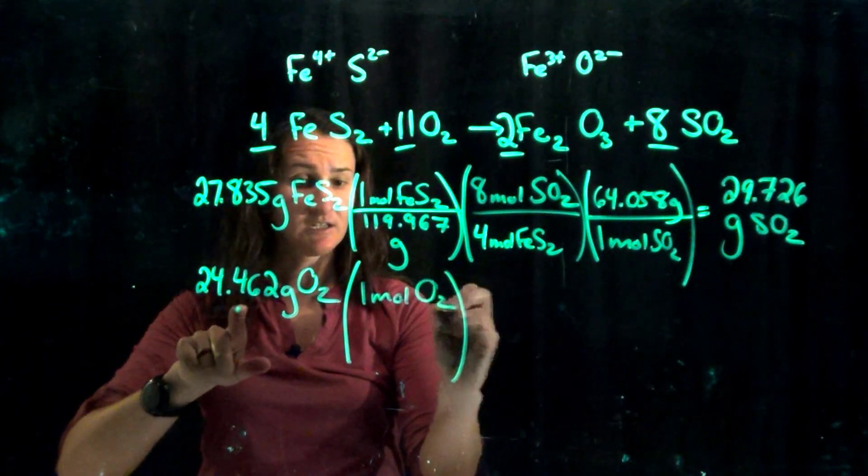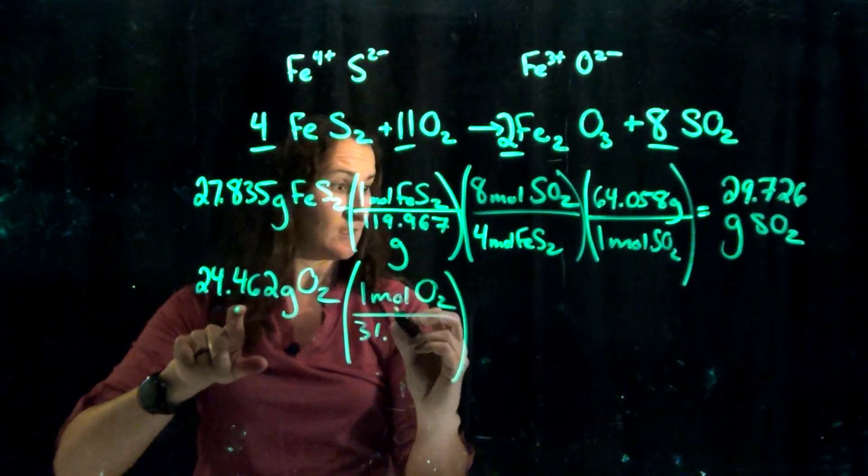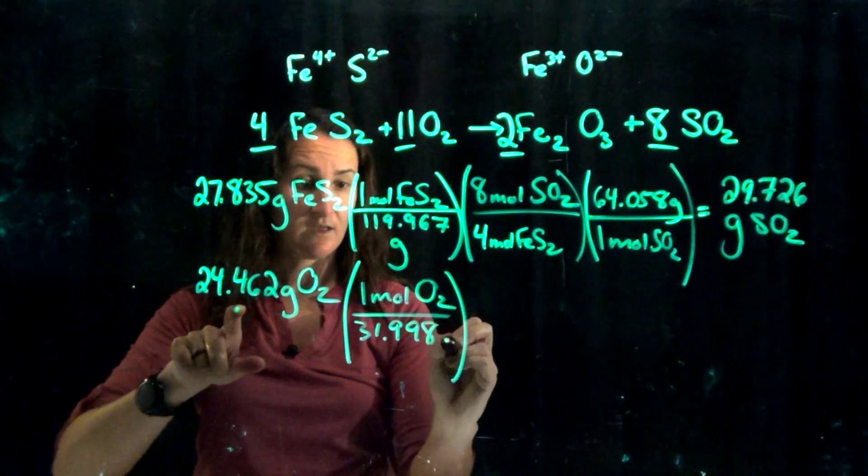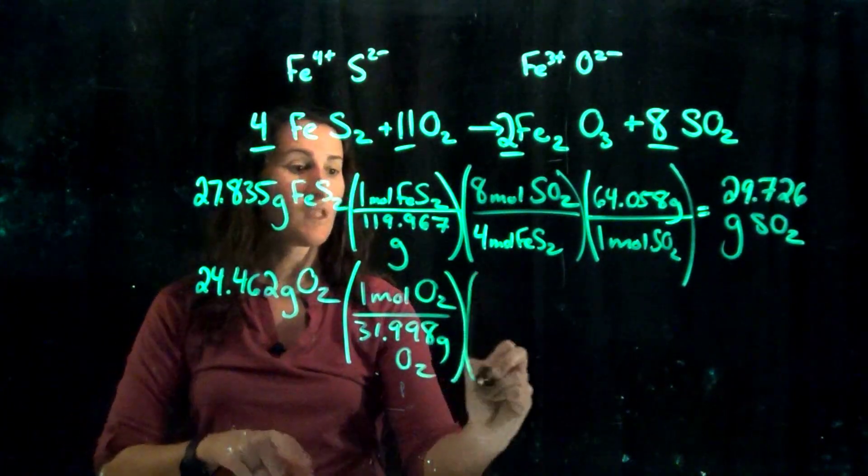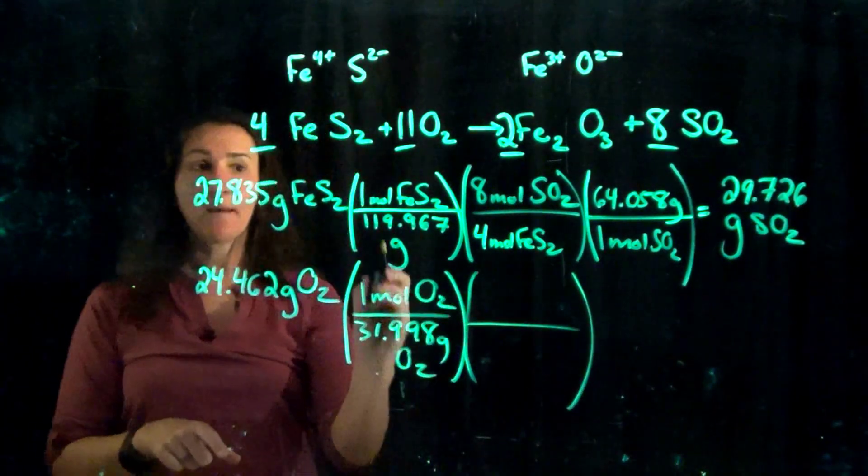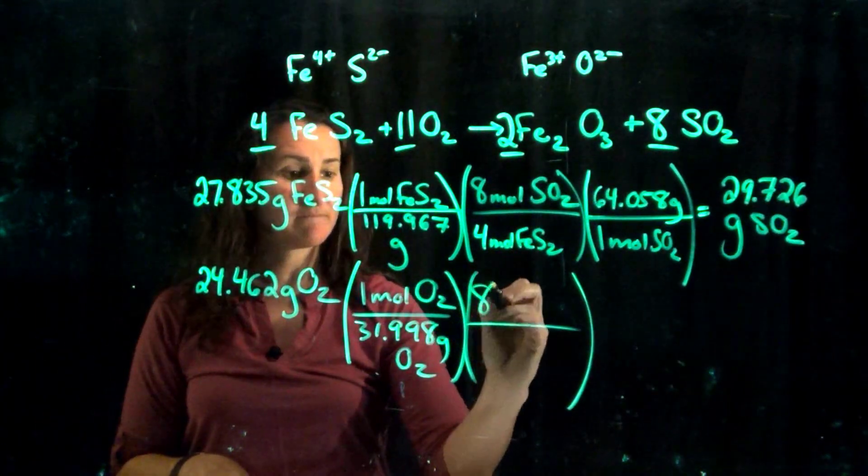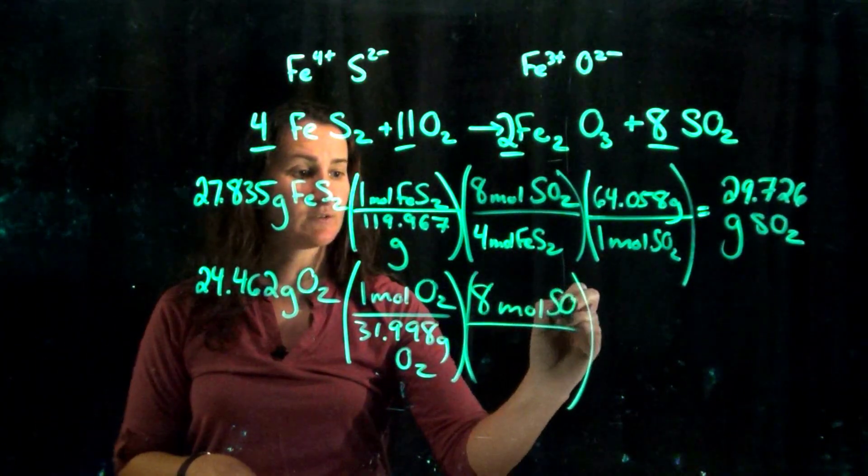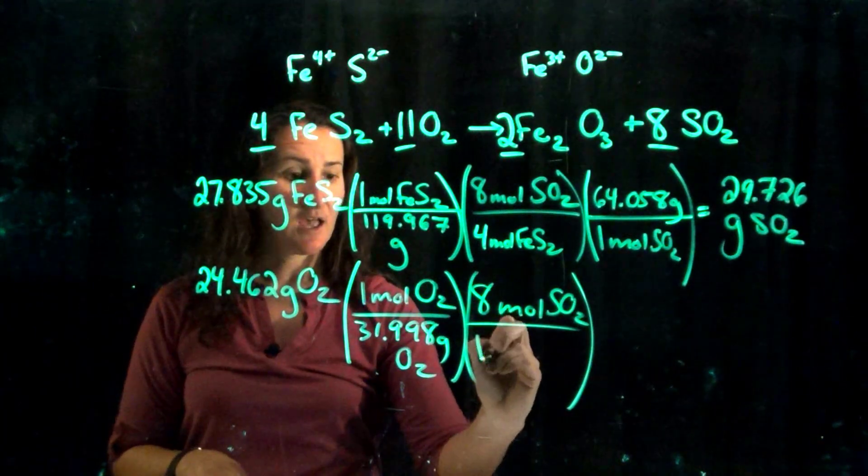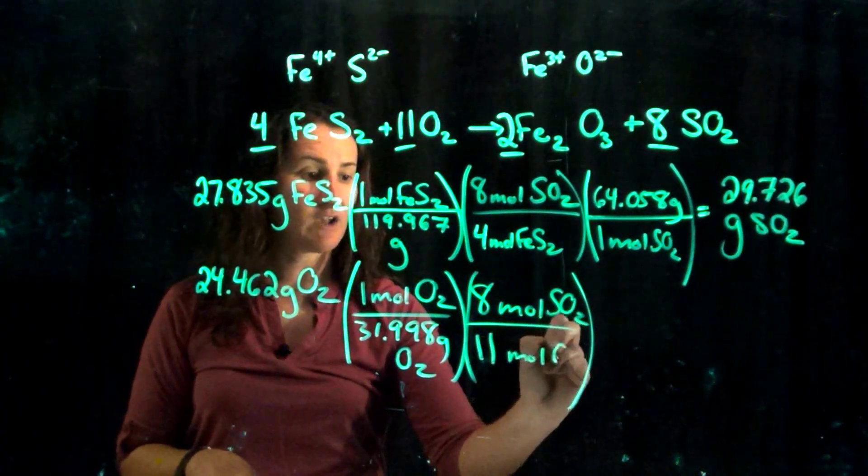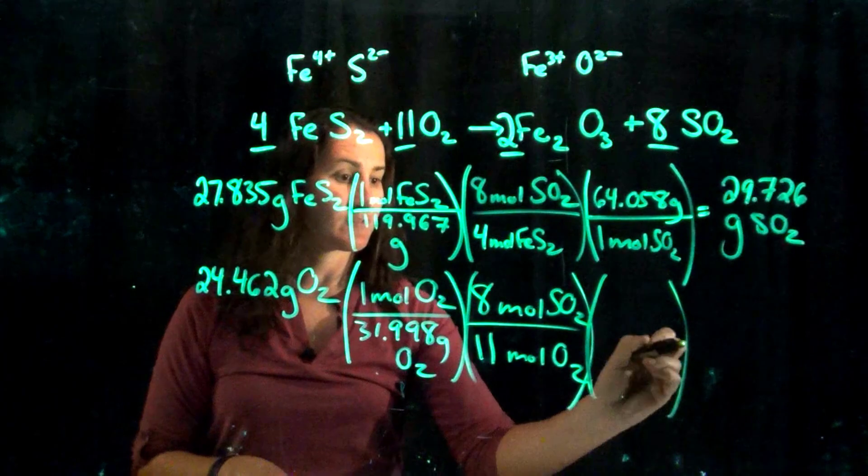We've got grams, let's convert from moles of oxygen to grams of oxygen, and now we need to convert from moles of oxygen to moles of sulfur dioxide. So we have eight moles of SO2 for every 11 moles of oxygen.